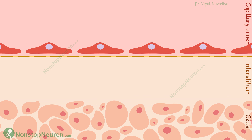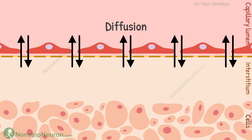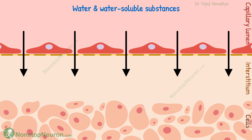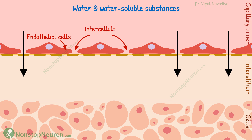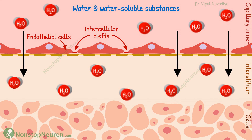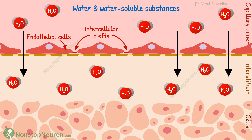In short, nutrients and waste products are not treated separately. But based on how cells affect their concentration in interstitial fluid, there is either net delivery or net uptake. Now let's see the details about the capillary exchange. The mixing up of fluid occurs mostly by diffusion. Water and water-soluble substances move through the intercellular clefts. The intercellular cleft is a space in between adjacent endothelial cells.